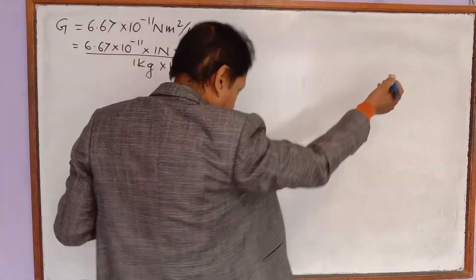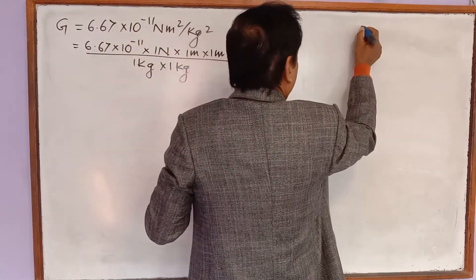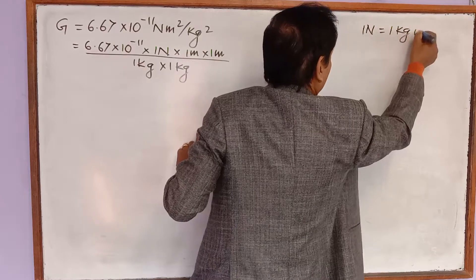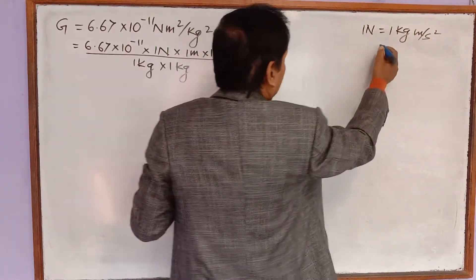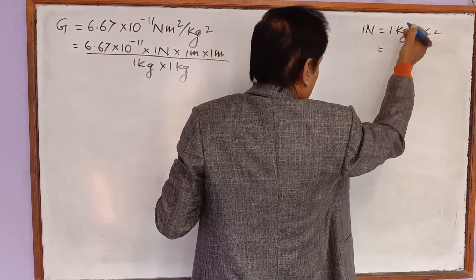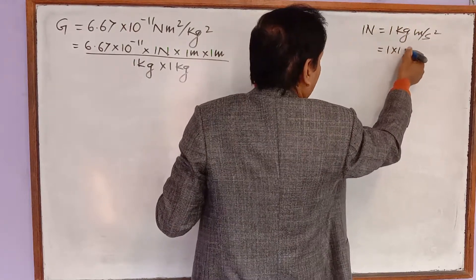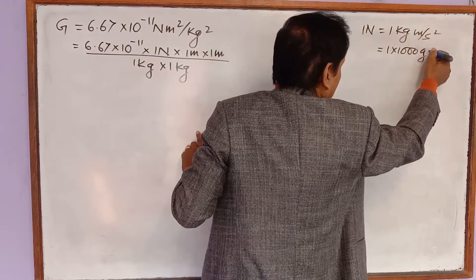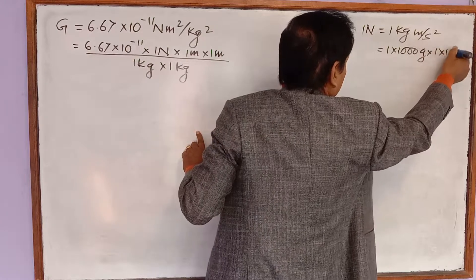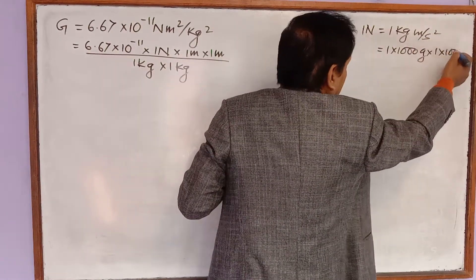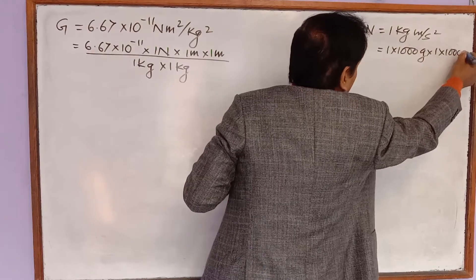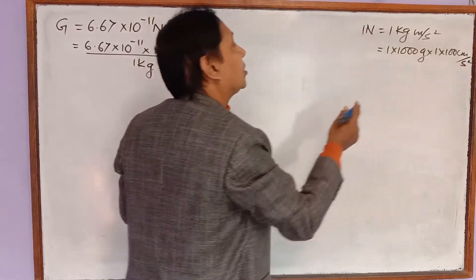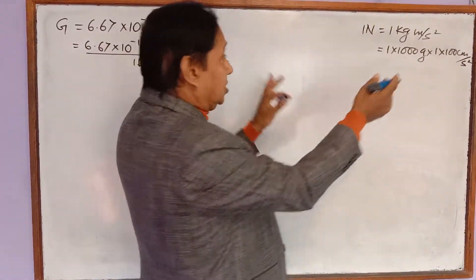One Newton — the expanded form of Newton is kg meter per second square. Now, kg should be converted into gram by multiplying by 1000, and meter should be converted into centimeter by multiplying by 100. In the denominator we have second square. According to the CGS system, time is also measured in seconds, so we don't have to convert seconds.